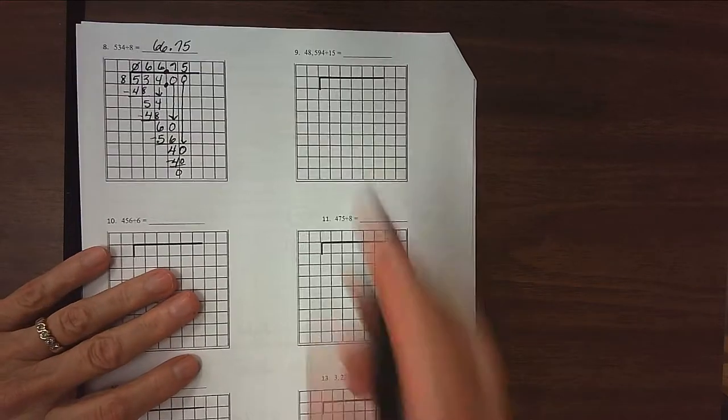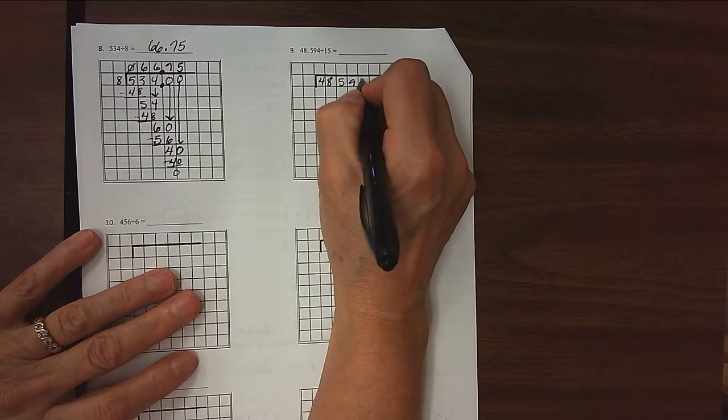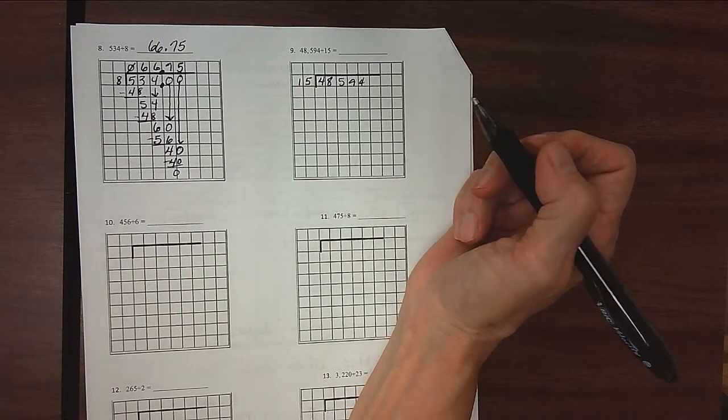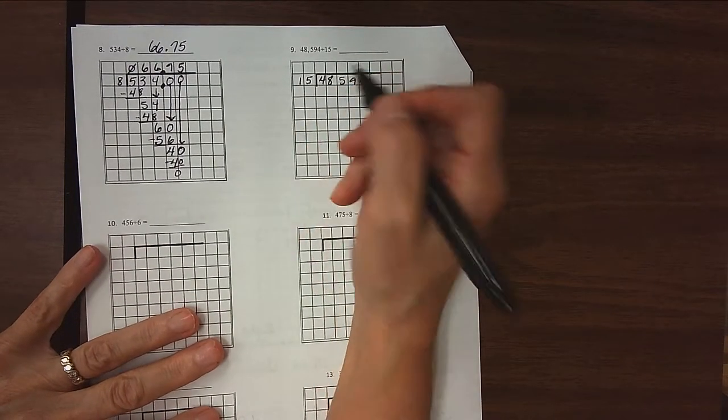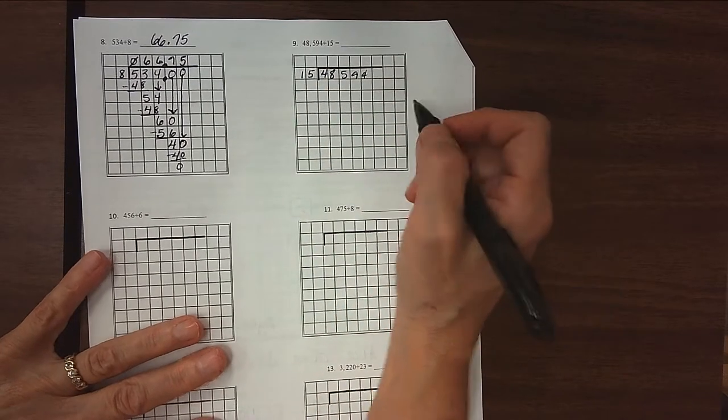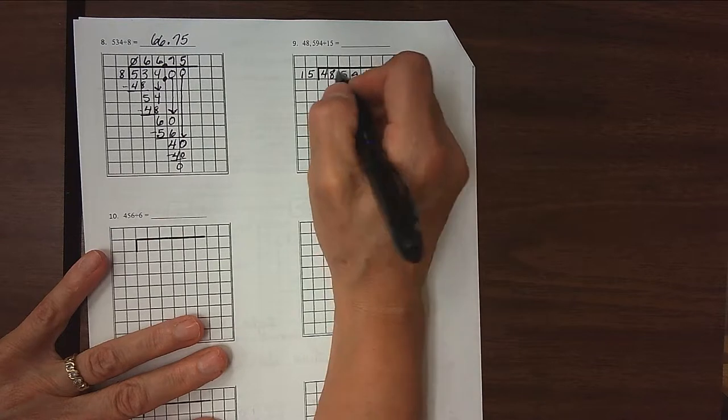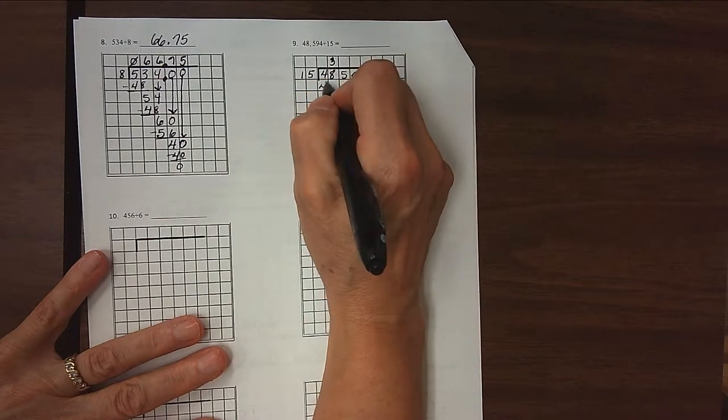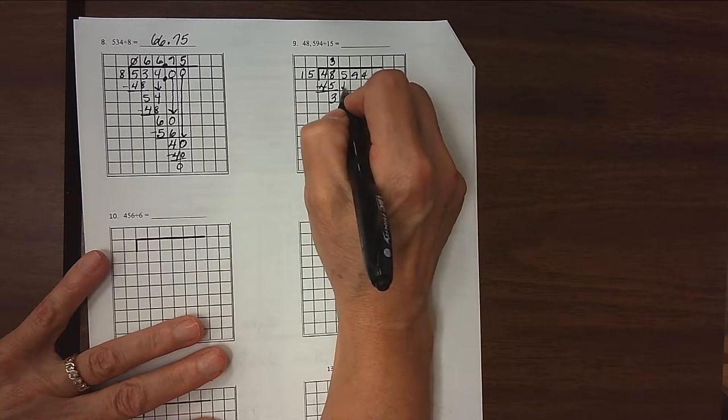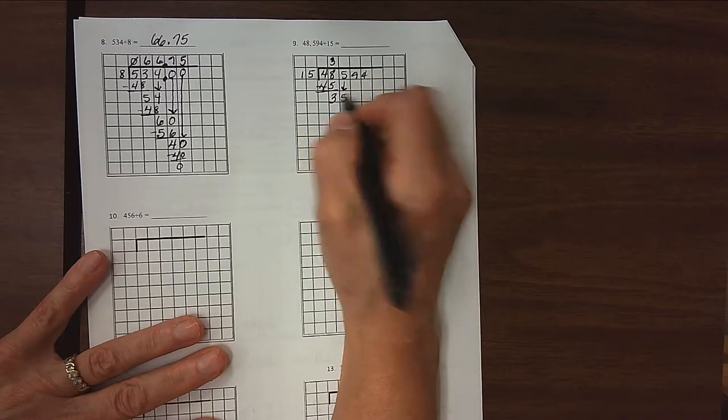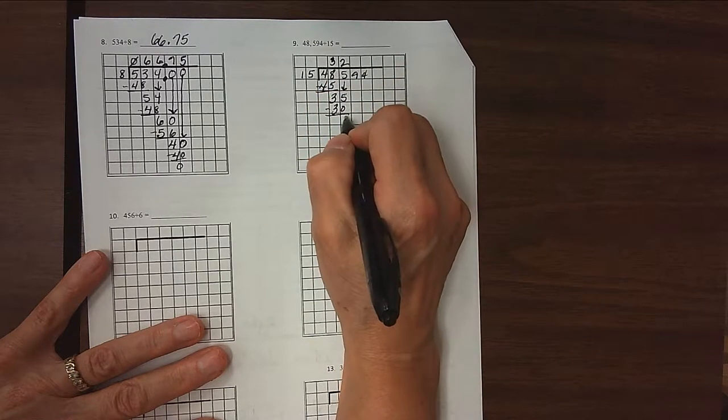Number 9 is 48,594 divided by 15. I don't put the comma in there because sometimes those get a little confusing. I like working with 15s because they're pretty easy to think about how many times 15s go into numbers. So we know that 15 will go into 48 three times because 3 fifteens is 45. Subtract, and we get 3 here. Bring down our 5. 15 will go into 35 twice because 2 fifteens is 30. Subtract, and we get 5.